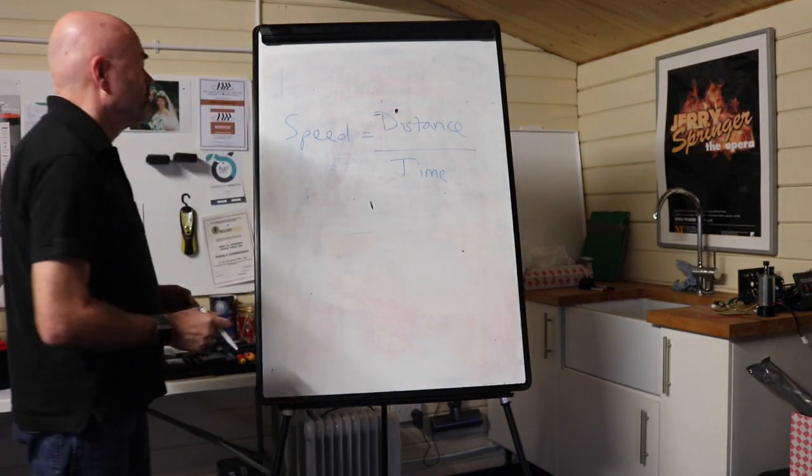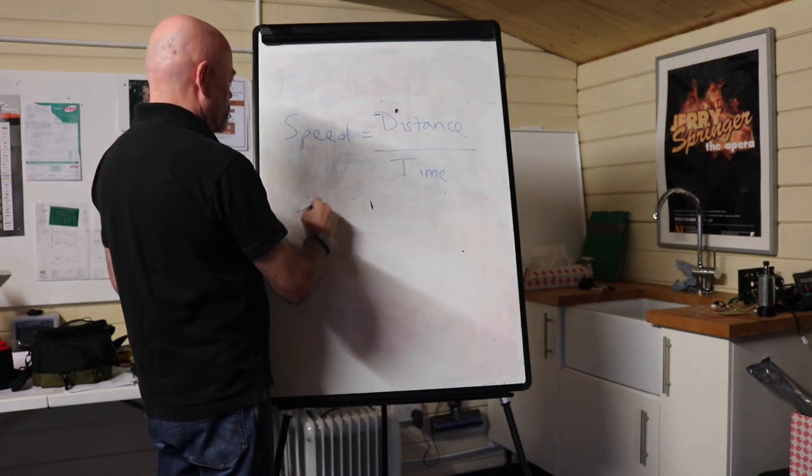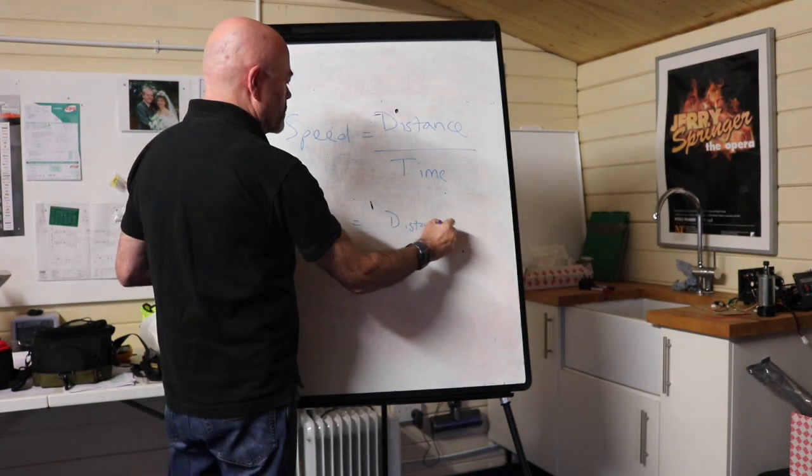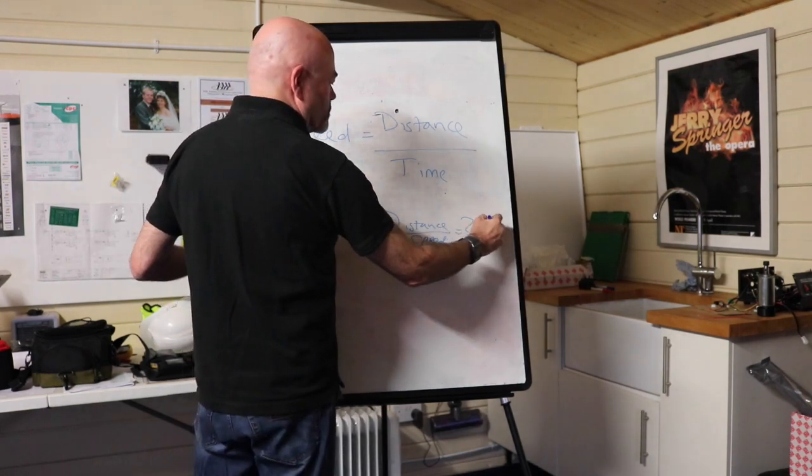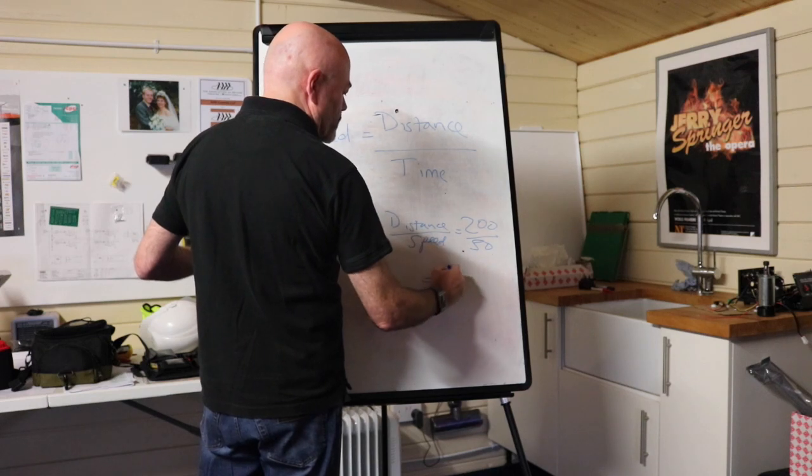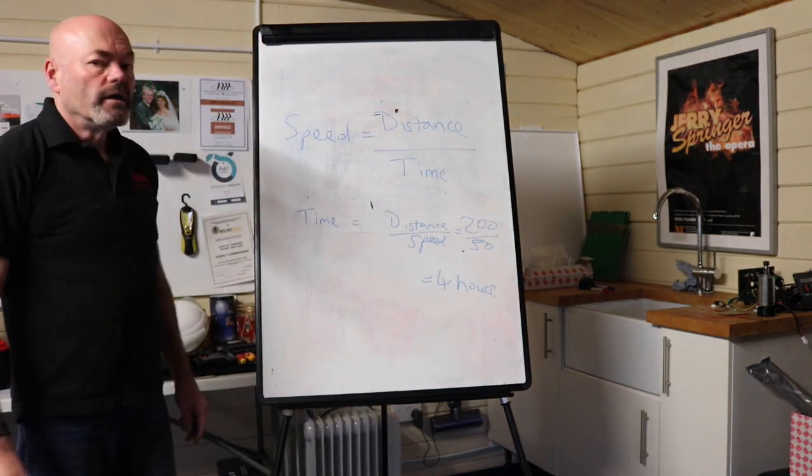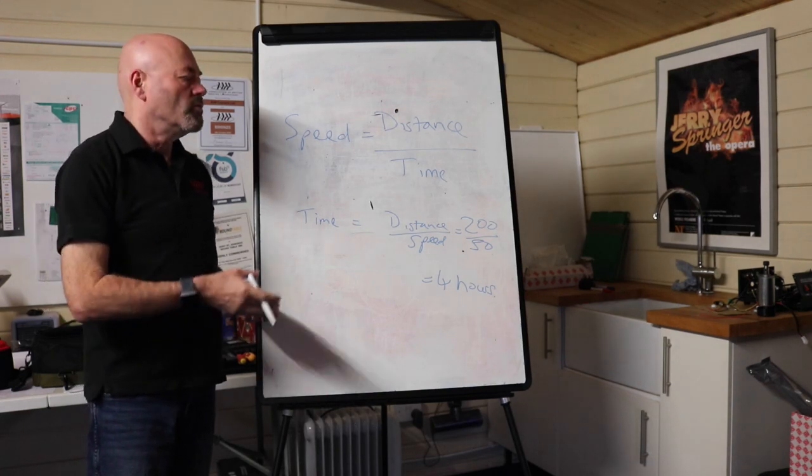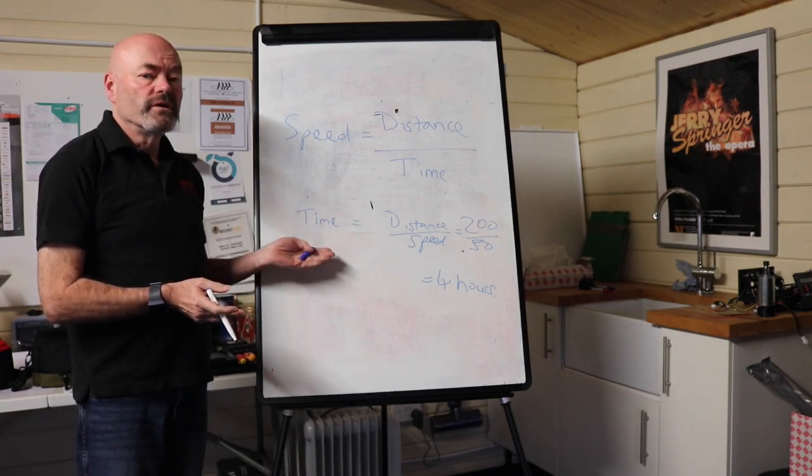So using the example we just used, if you want to know how long it's going to take, time equals distance over speed, 200 miles, 50 miles an hour equals four hours. It's the same in automation. There we're dealing with millimetres per second, or degrees per second, if it's a revolve or something like that. But the actual relationship between distance, speed and time is the same.